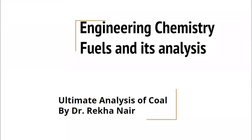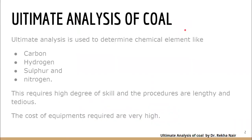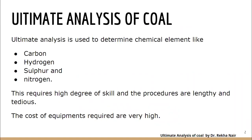Hello friends. In this video we will be discussing about ultimate analysis of coal. In the previous video we discussed about proximate analysis of coal, where we calculated percentage moisture, percentage volatile matter, percentage ash content and fixed carbon. In ultimate analysis, we determine the chemical elements like carbon, hydrogen, sulfur, and nitrogen. The amount of these constituents determines the quality of the coal.